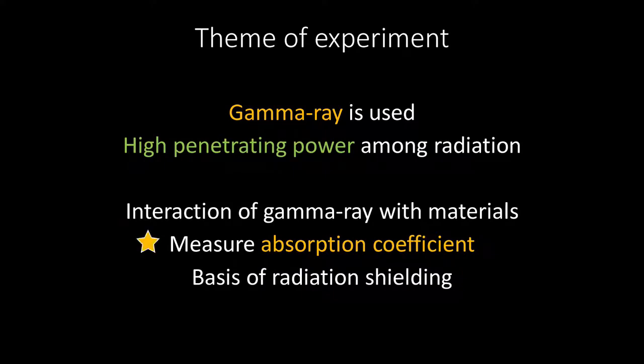Specifically, we measure the absorption coefficient. The absorption coefficient is a physical quantity that is the basis of radiation shielding. Next, we will discuss the interaction between gamma rays and materials. There are three main types of interactions.